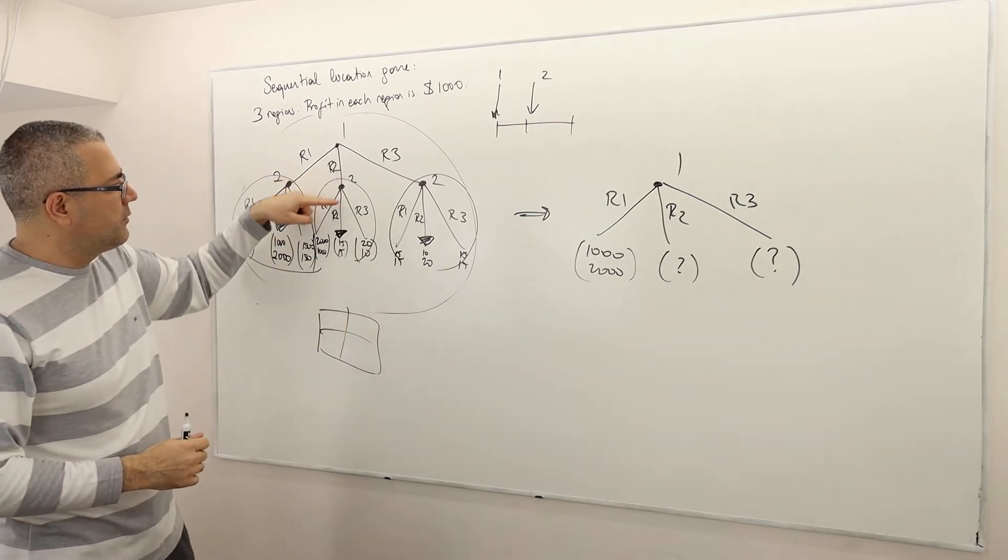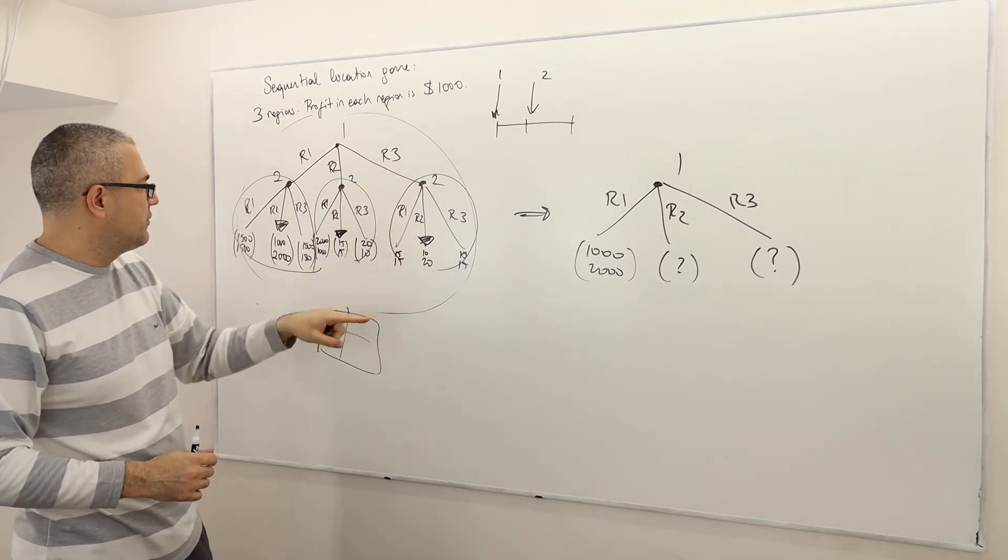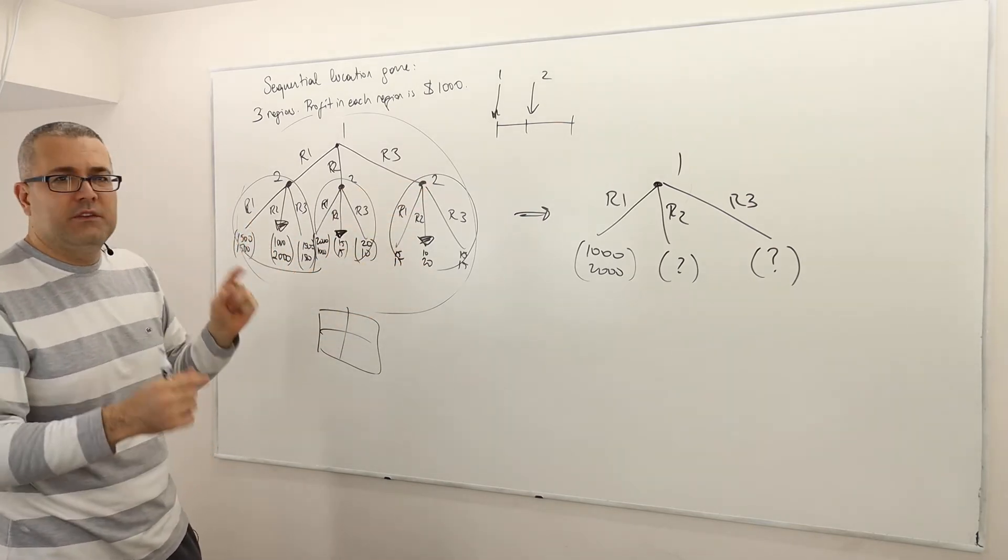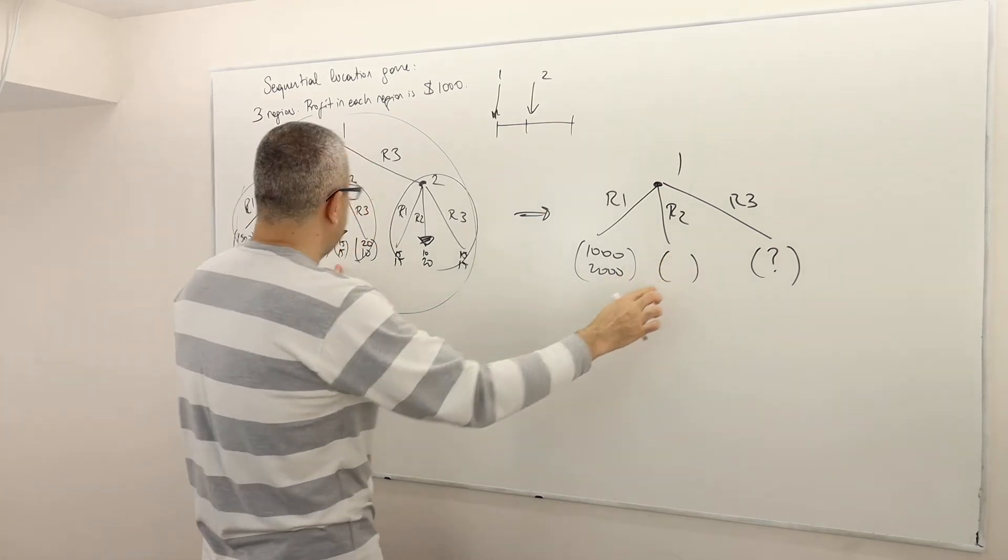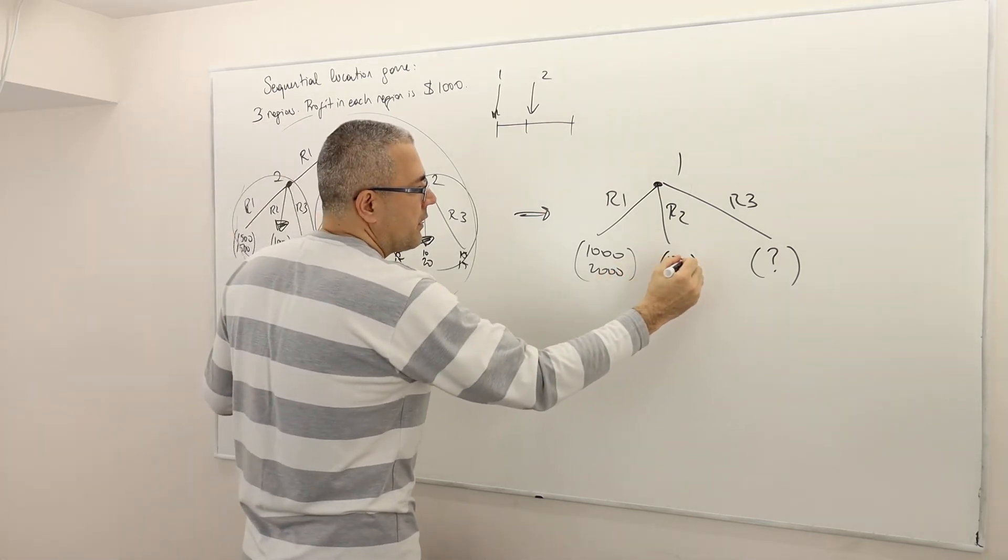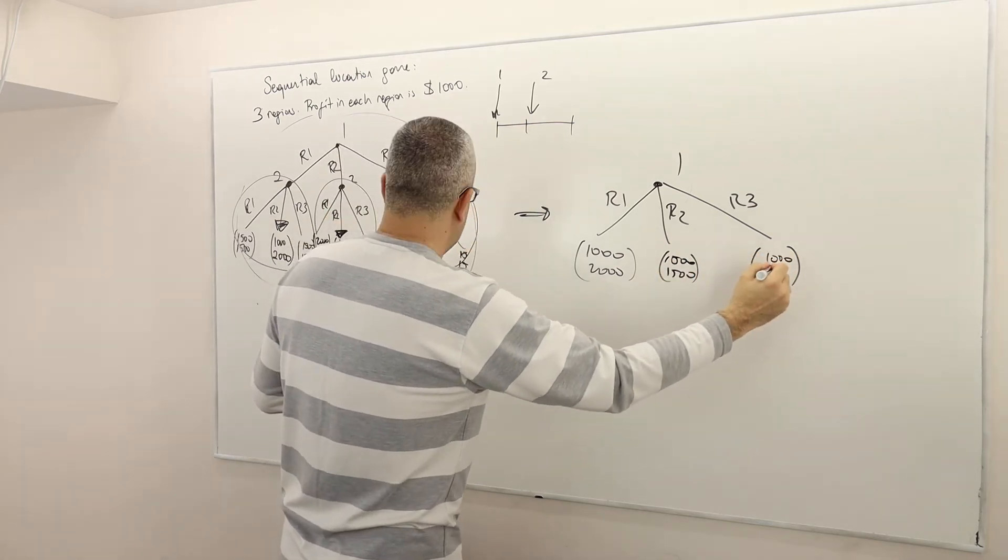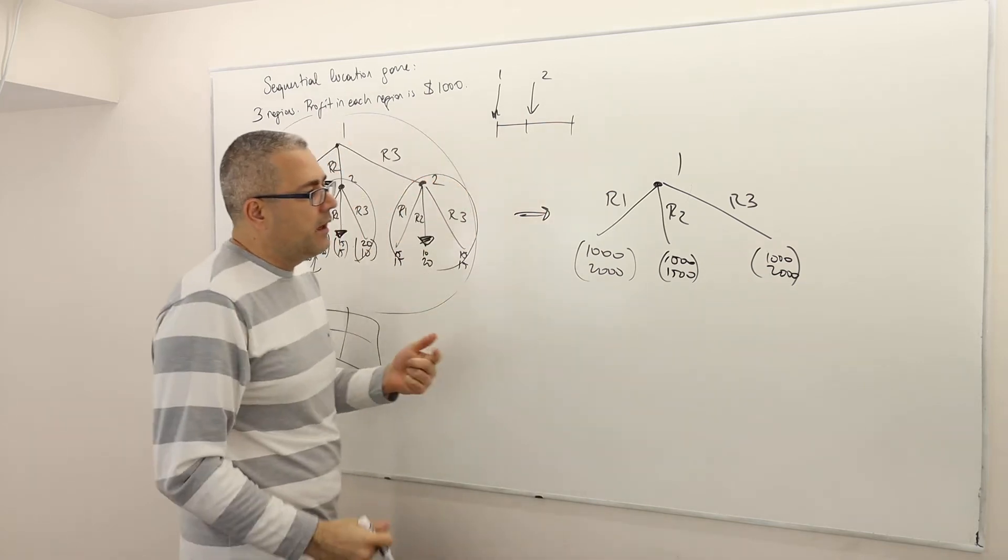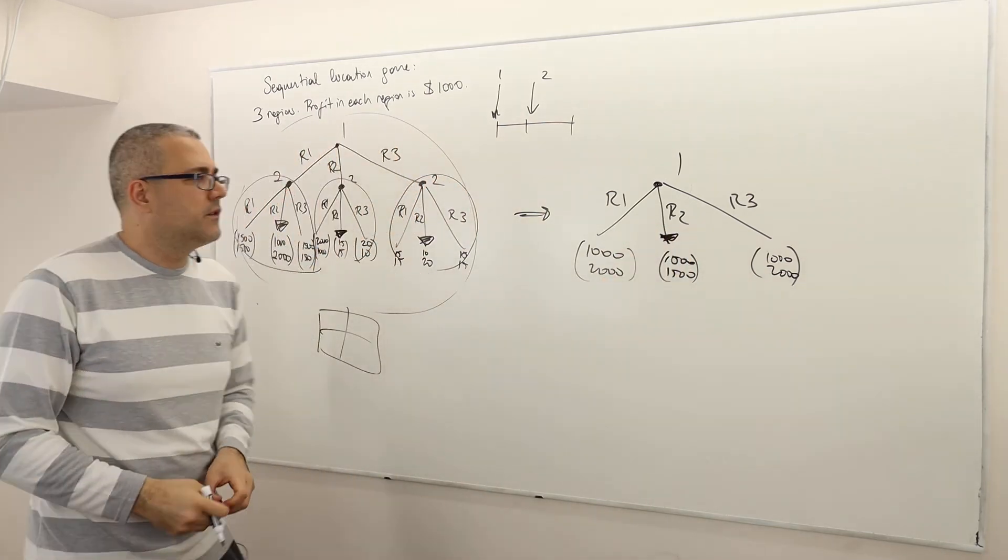You can figure out those payoffs. What I realized is that player two's optimal action here is to choose R2, and player two's optimal action here is again R2. So always R2 is the optimal action. And so I figured out that the payoffs are going to be 1,500 here, and it's going to be 1,000 here and 2,000 here. And then, obviously, given all this, the optimal strategy for firm one is R2.